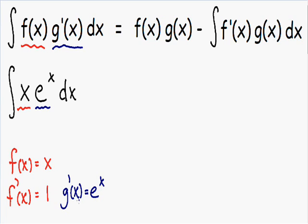And now that we know what g prime of x is we can use this to find our g of x. g of x is the integral of g prime. So the integral of e to the x is also e to the x. So now we've actually finished the hardest part. And we just need to plug everything into the formula.